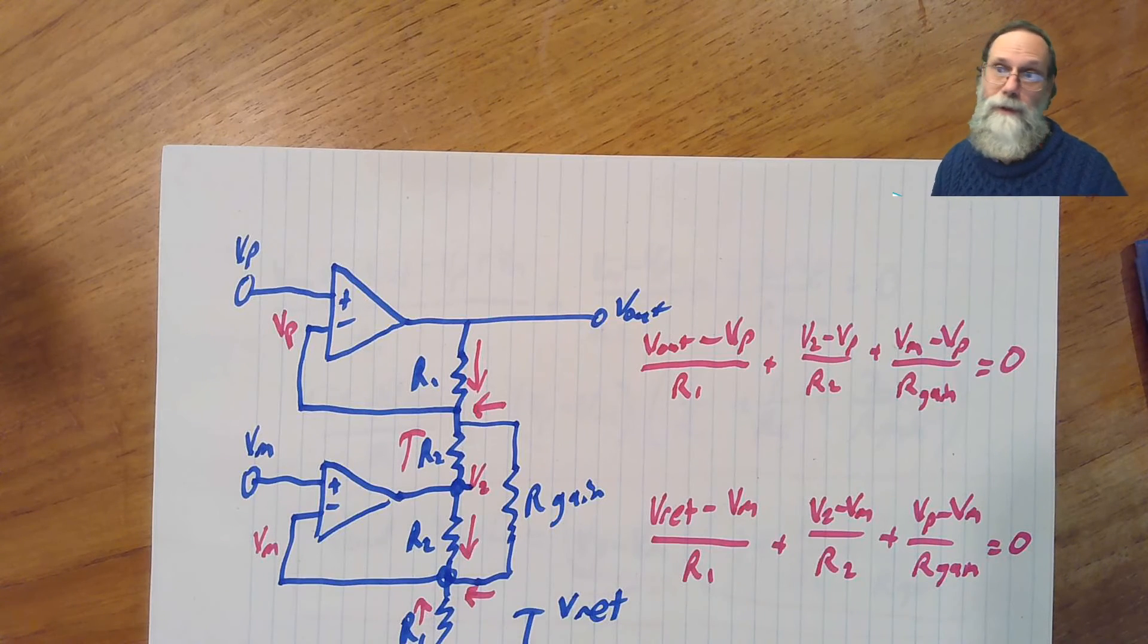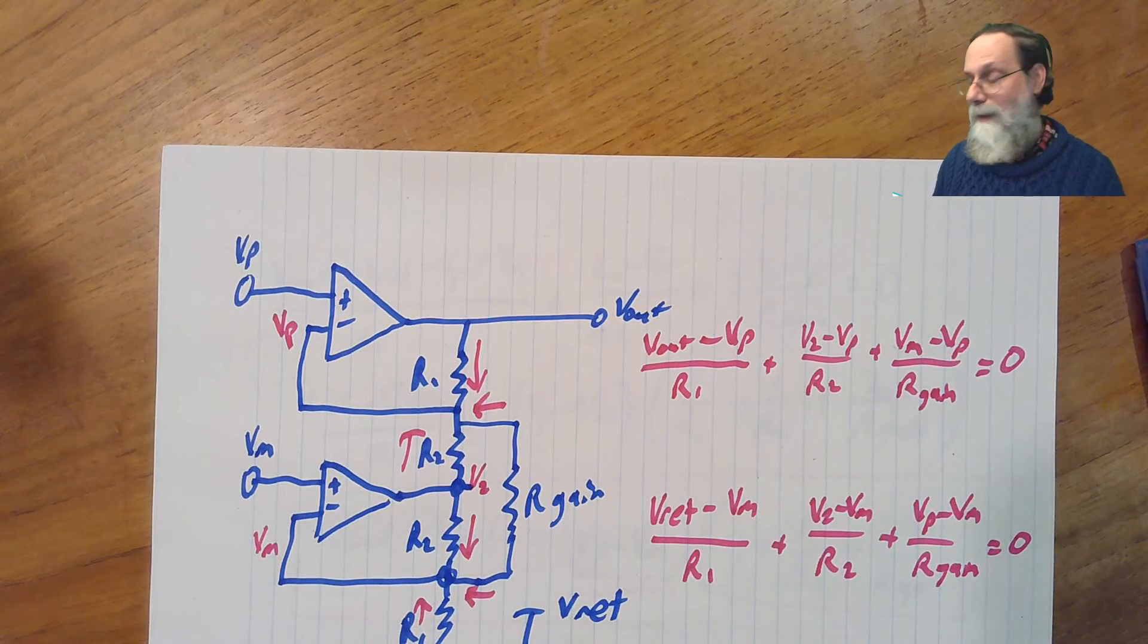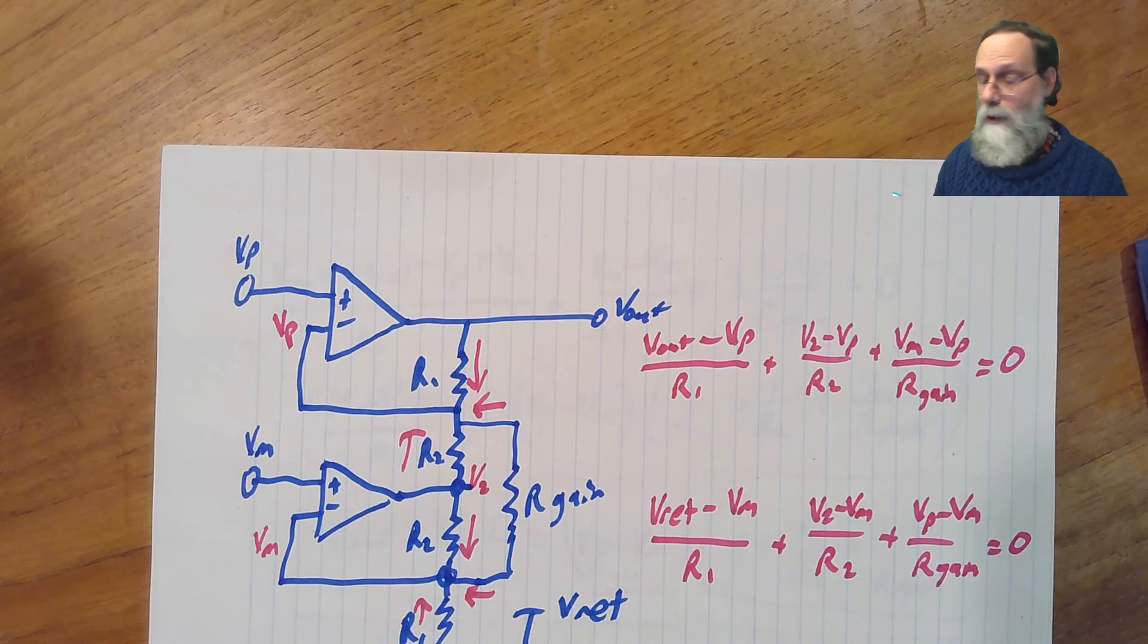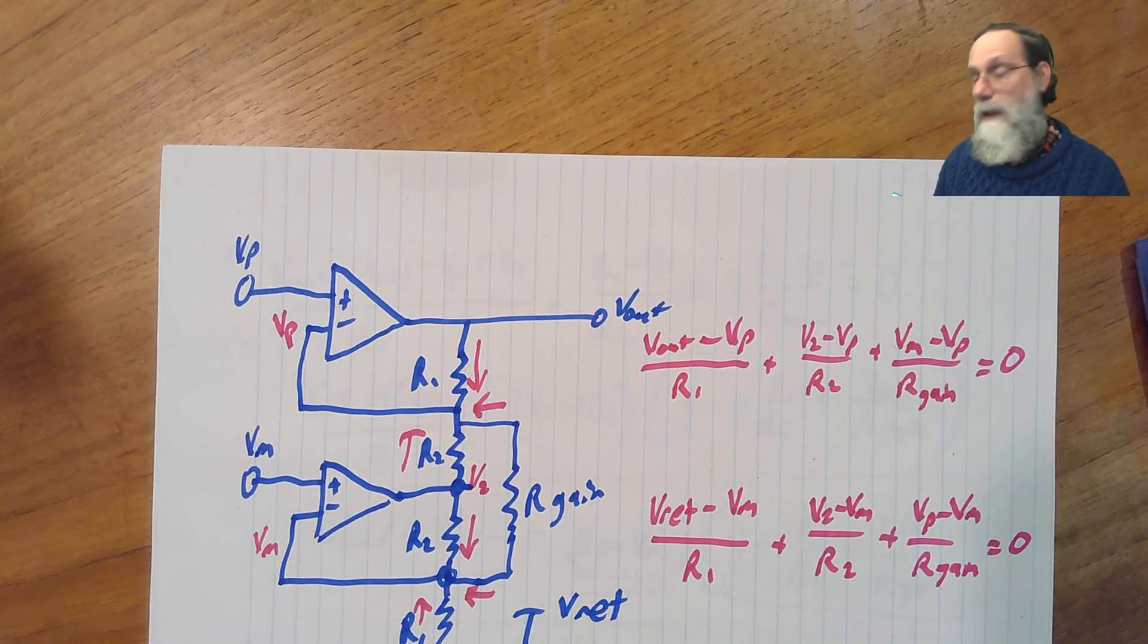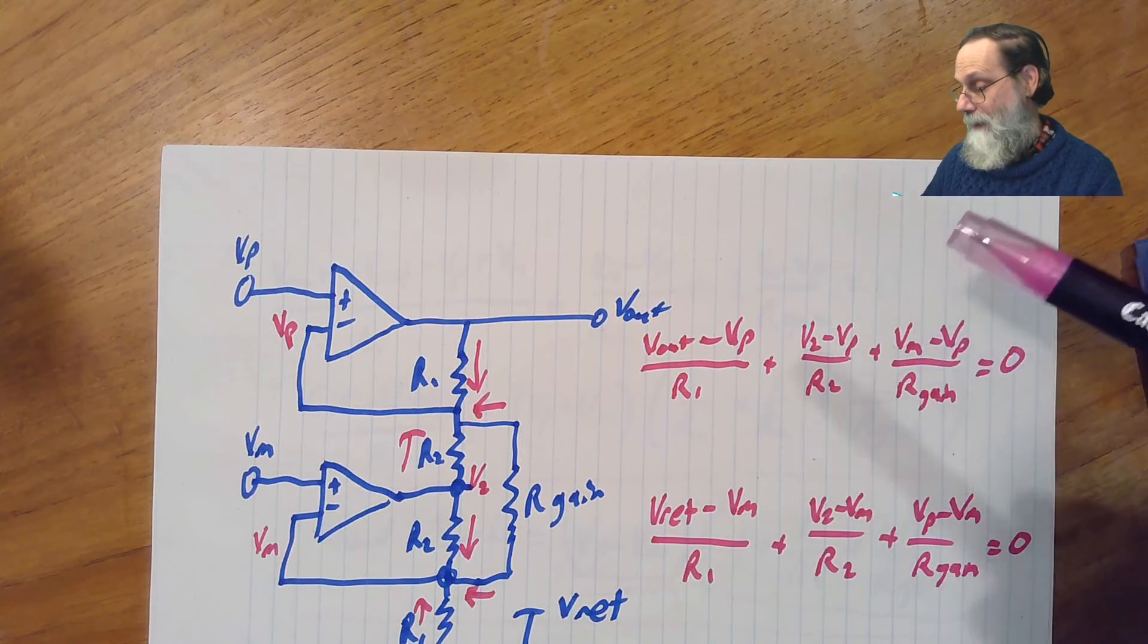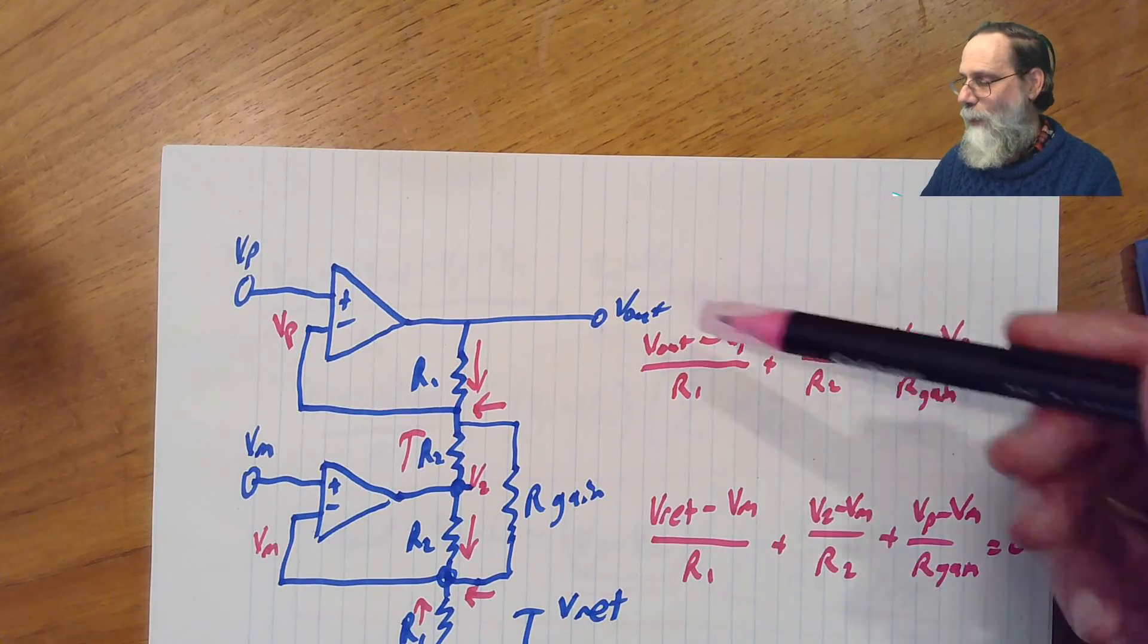If we needed a v2 here that was, you know, 100 volts or something, we wouldn't be able to achieve it. We get clipping here and the whole thing wouldn't work. Figuring out exactly what v2 can be, it can be done by using these two equations basically. Knowing what vout is,